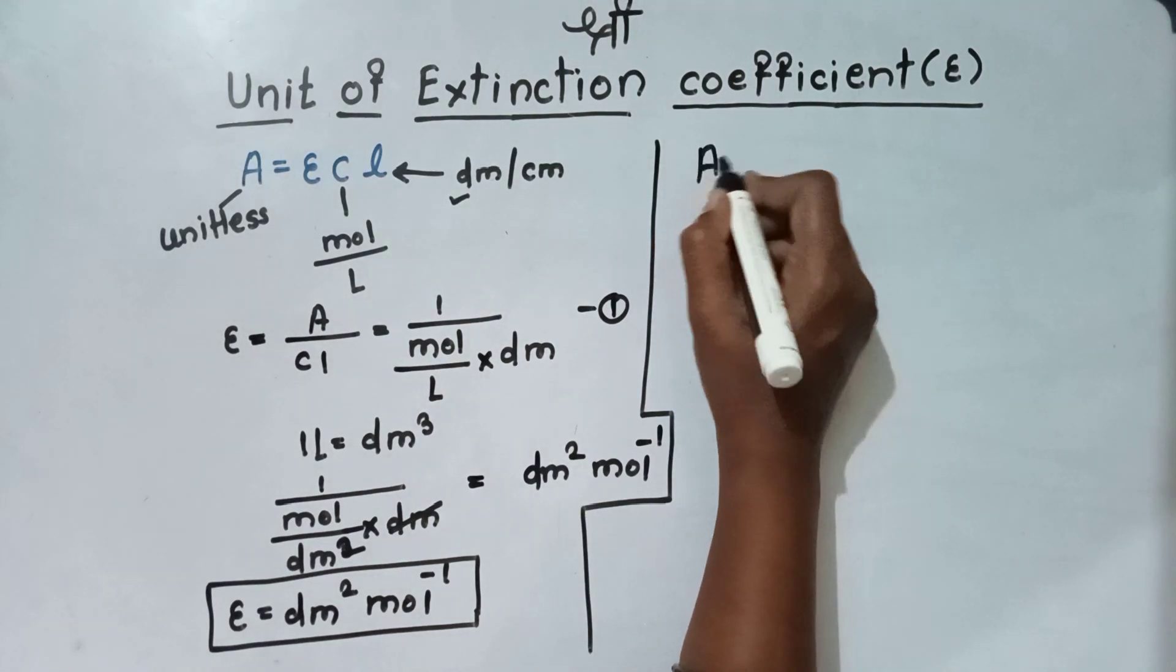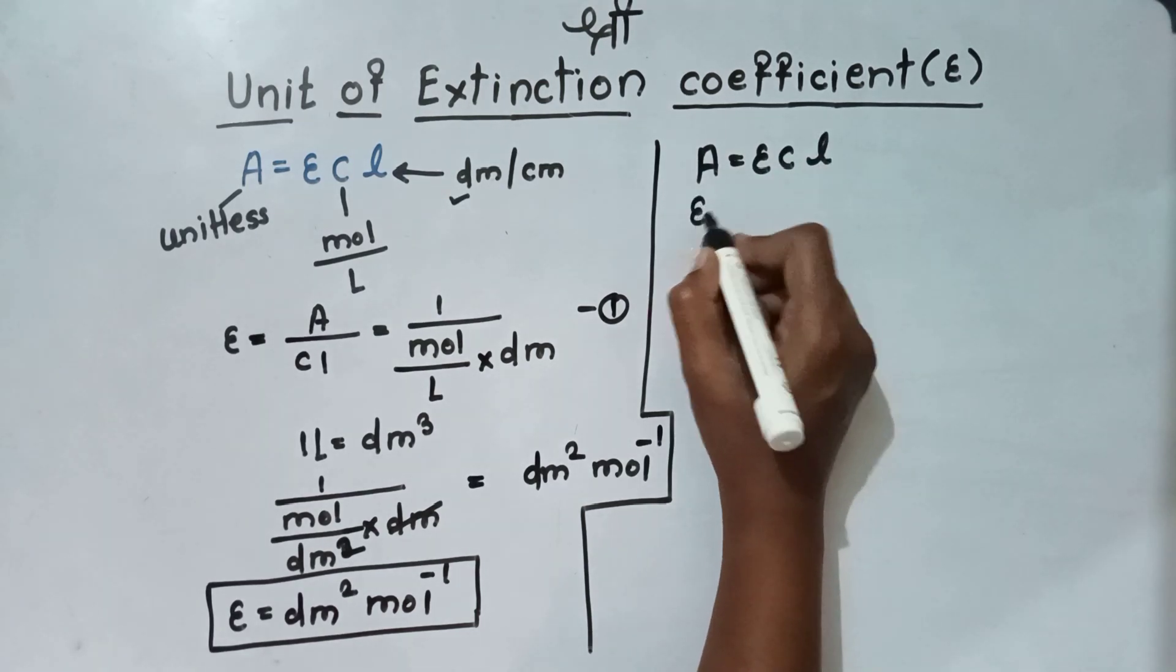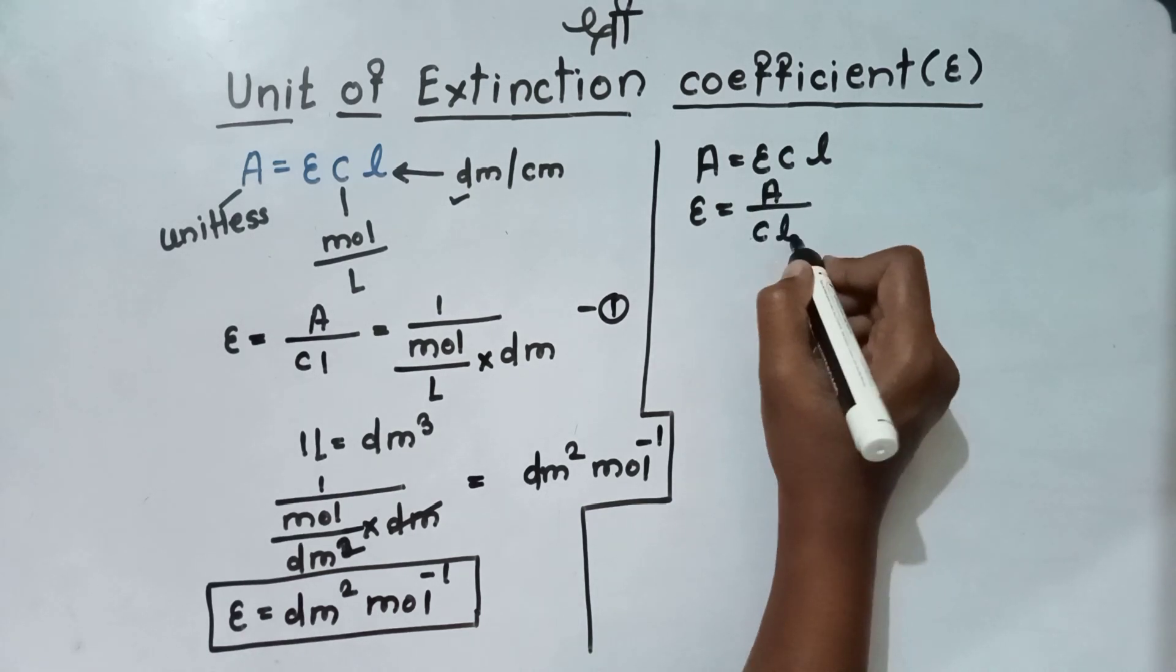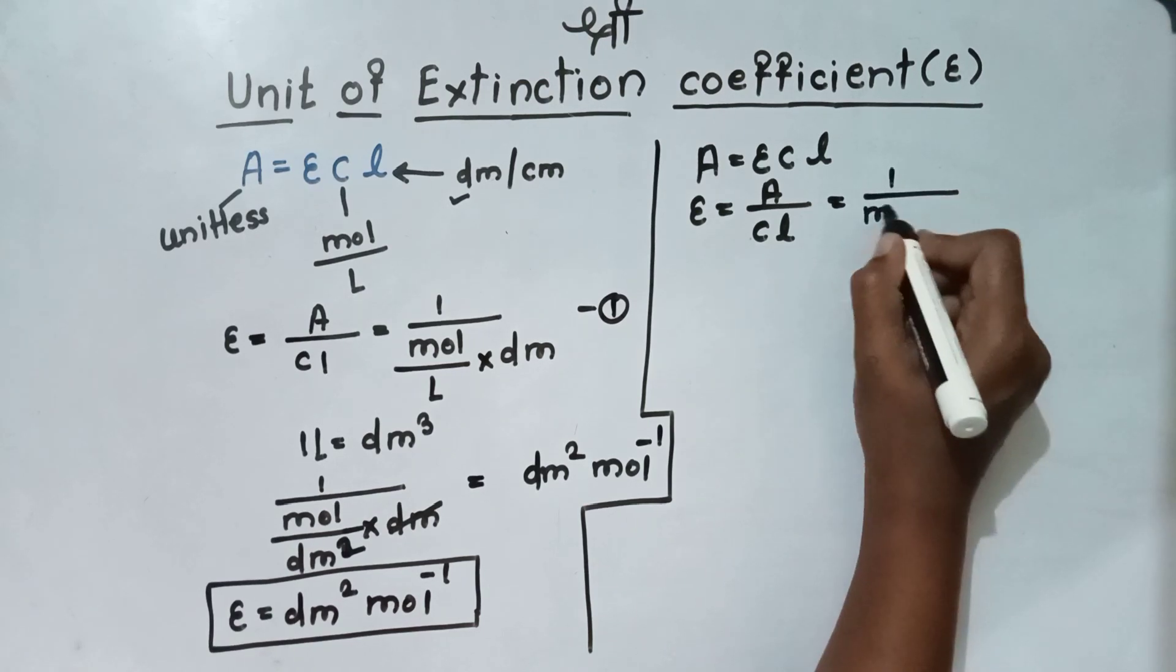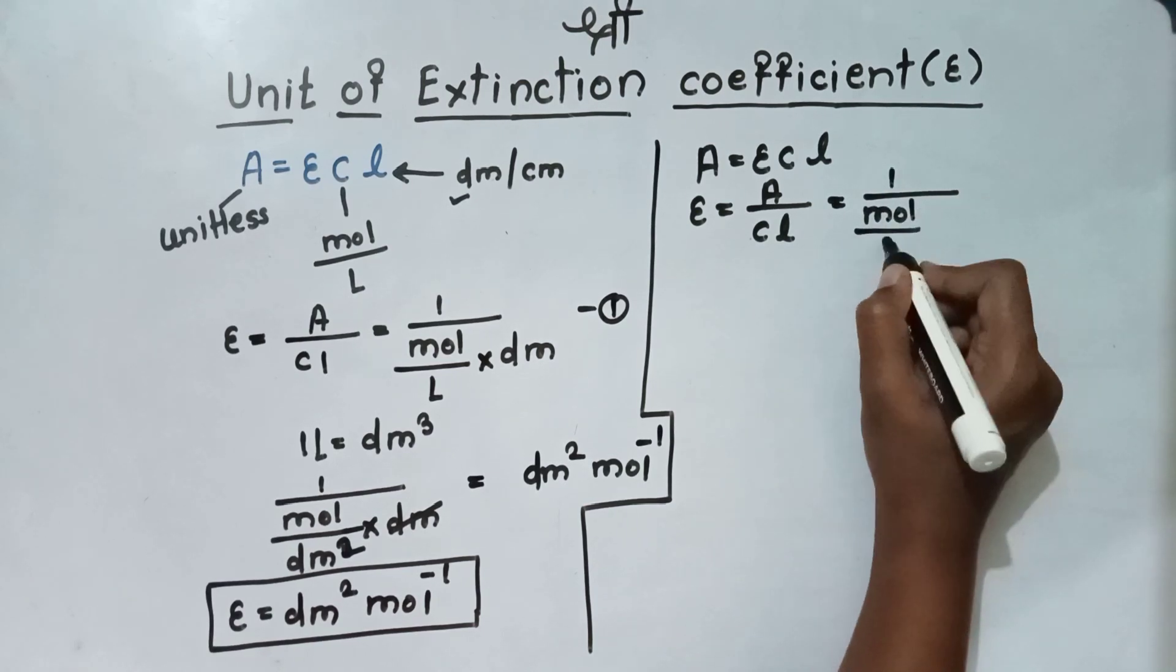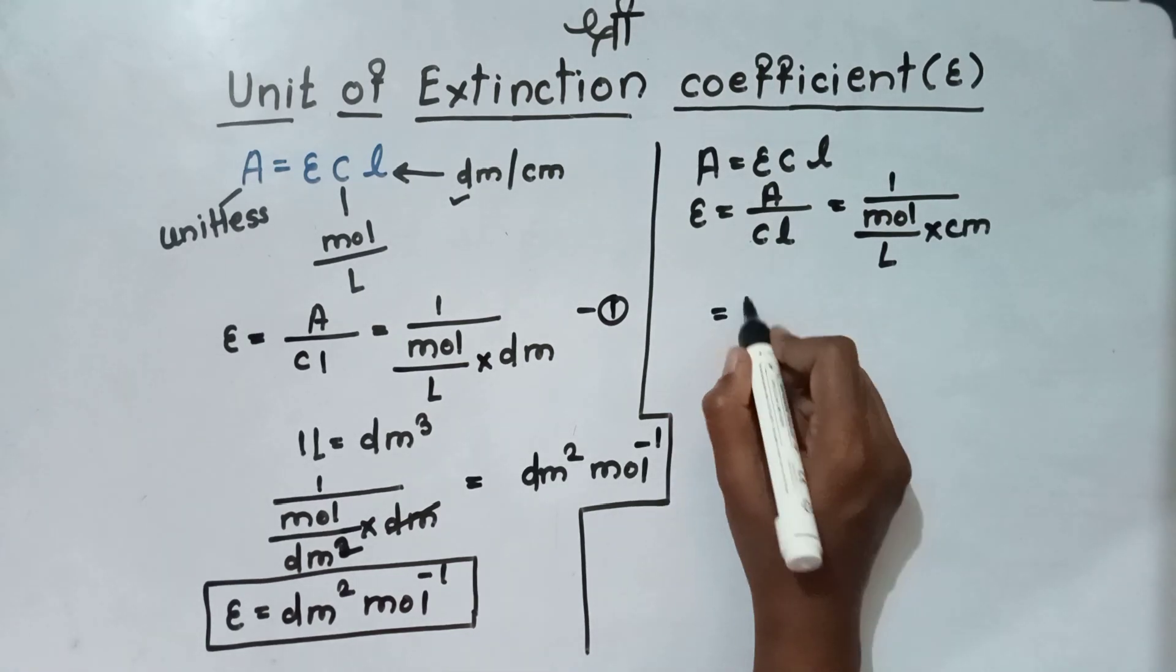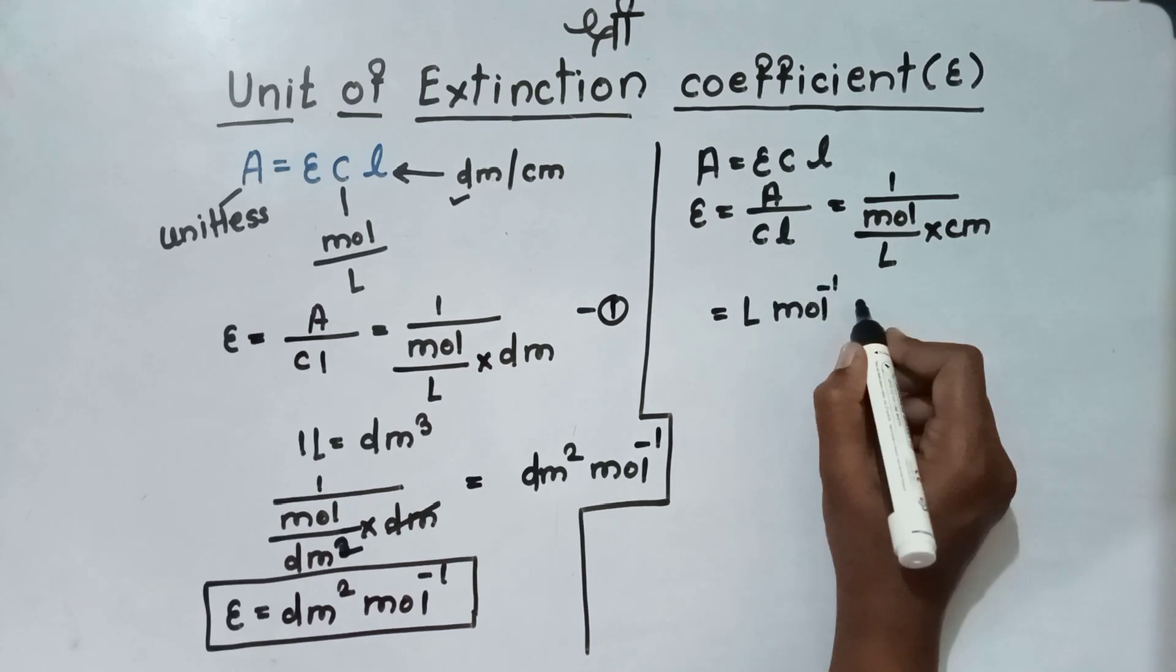A is equal to epsilon cl. Epsilon is equal to A by Cl. 1 by mole per liter into centimeter. Then, it will become liter per mole per centimeter.